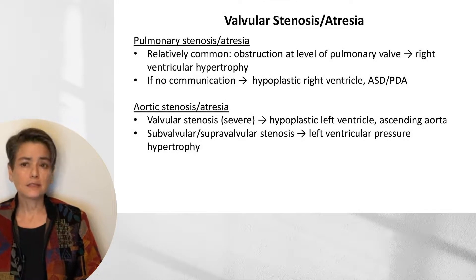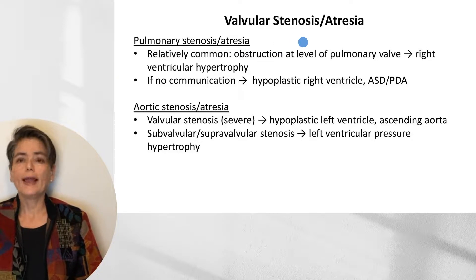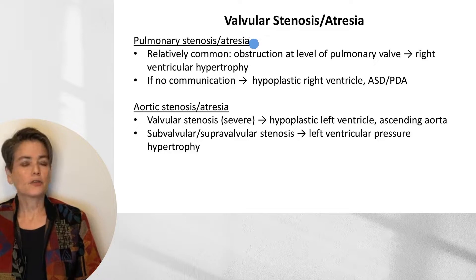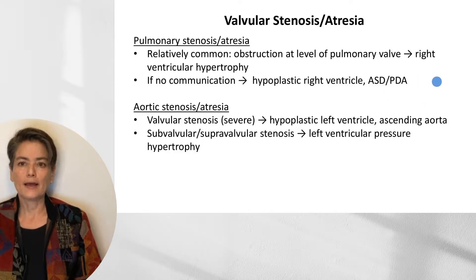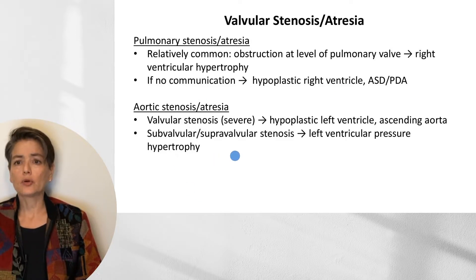The final entities to consider are valvular stenosis and atresia — specifically pulmonary and aortic stenosis and atresia. Pulmonary stenosis is relatively common, representing obstruction at the level of the pulmonary valve, leading to right ventricular hypertrophy. If the valve is atretic, we have a hypoplastic right ventricle and require an ASD or PDA for survival. For aortic stenosis, this tends to occur at the valve level; when severe, it can lead to a hypoplastic left ventricle and hypoplasia of the ascending aorta due to lack of blood flow. Subvalvular or supravalvular aortic stenosis can also occur, causing left ventricular hypertrophy, though typically not as severe.